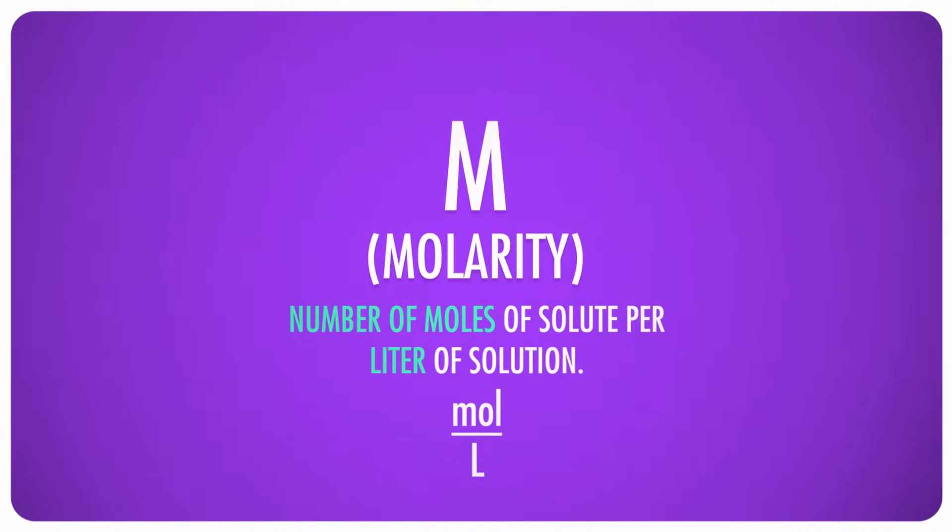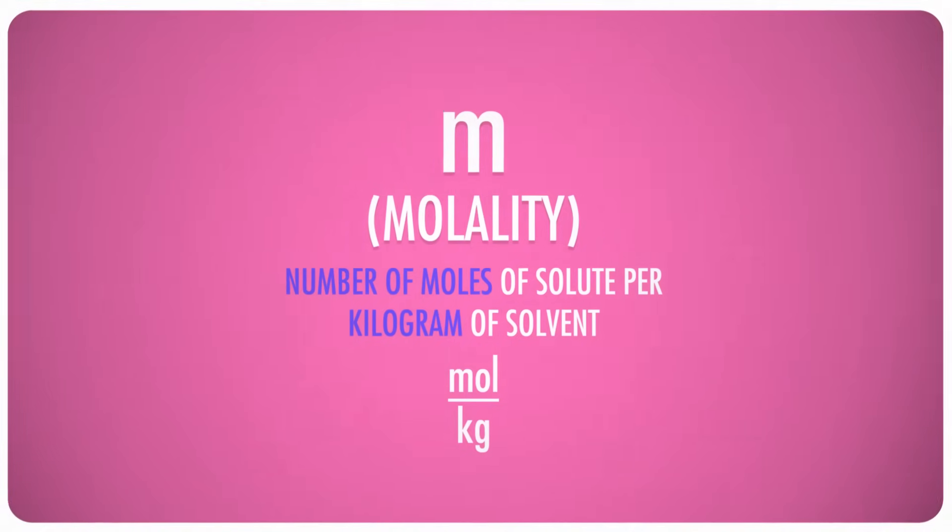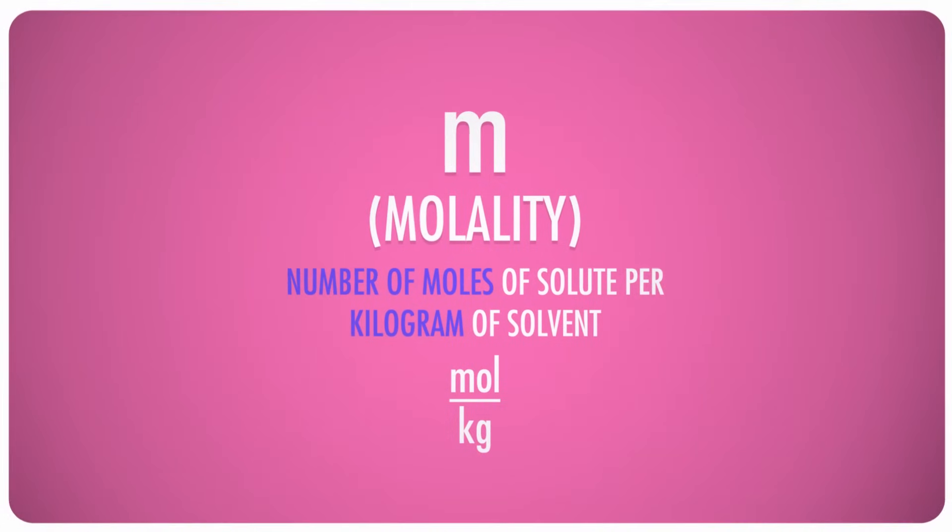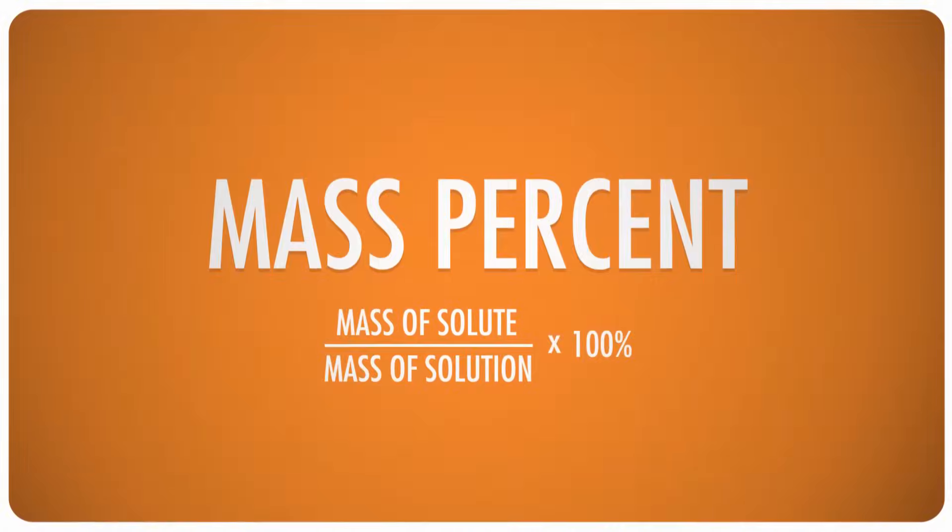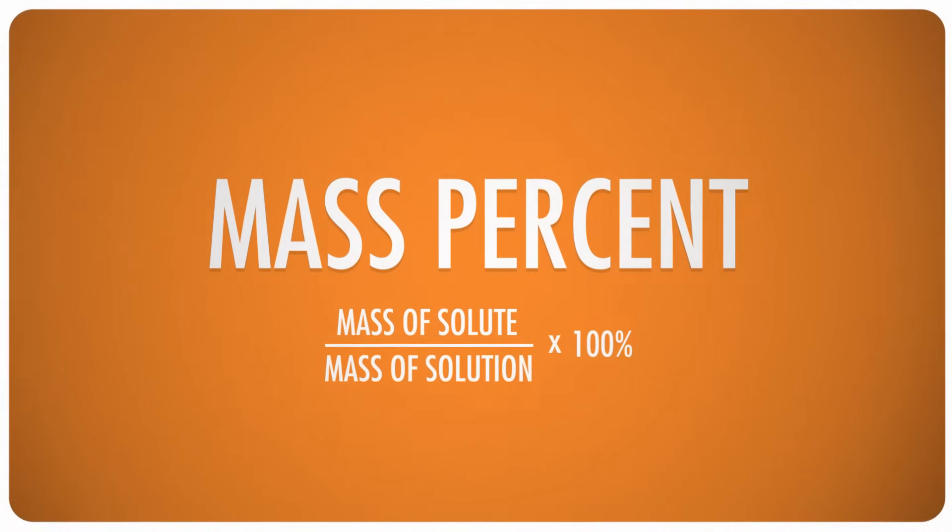Here are a few ways to do that. We can describe a solution by its molarity, the number of moles of solute per liter of solution, its molality, the number of moles of solute per kilogram of solvent, or its mass percent. The mass percent of a solution is the mass of the solute divided by the mass of the solution, all multiplied by 100.